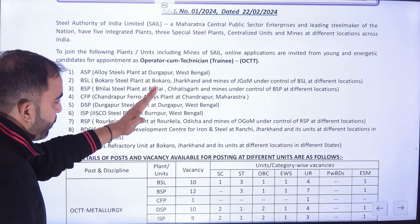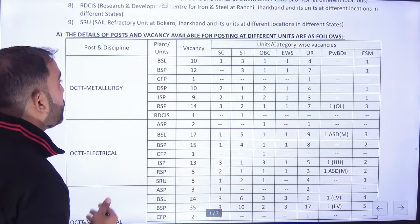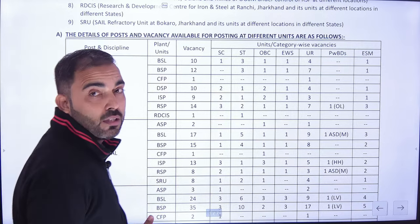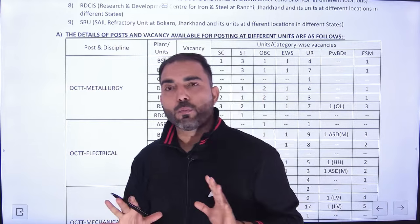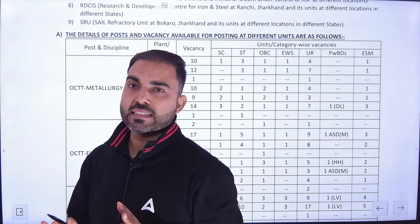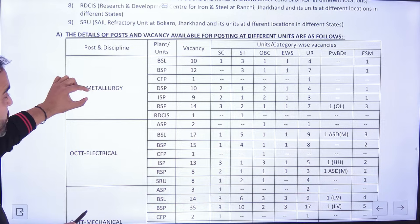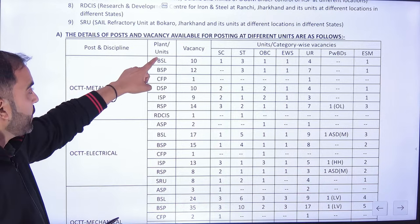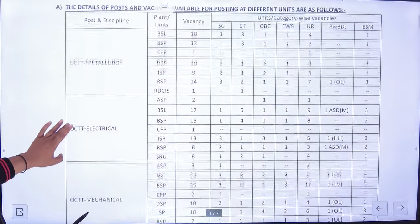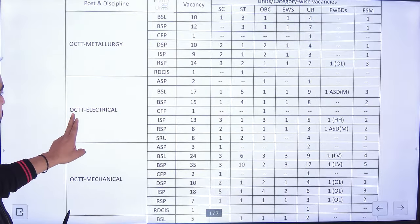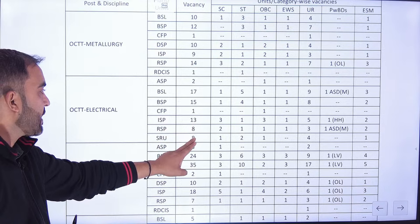याद रखिएगा, तो आप लोग यहाँ पे देख सकते हैं। कौन-कौन से posts में हैं, बहुत अच्छी vacancy है। Number of vacancy यहाँ पे बहुत अच्छी है, आप लोग जरूर apply करिएगा। Metal वर्ग में आप लोगों को अलग-अलग plants में देखो, बहुत ठीक-ठाक vacancy आपको दिख रही है। इस electrical में भी OCTT में आप लोगों को 2, 17, 15, 1, 13, 8, 8 — इस तरह की संख्या है।